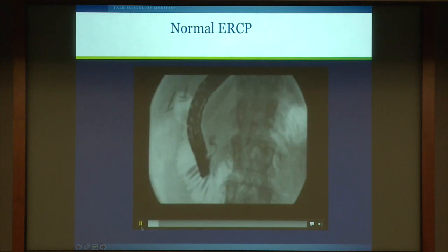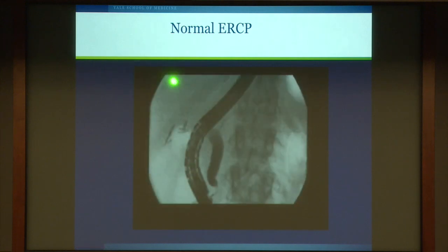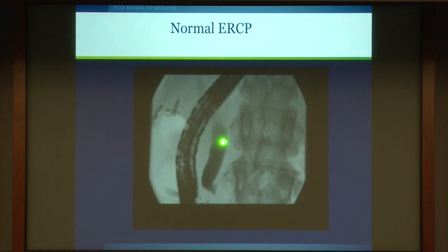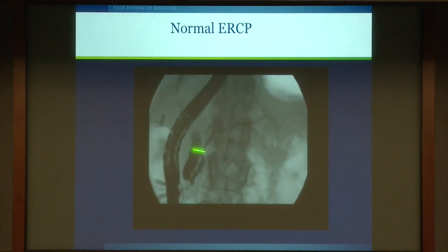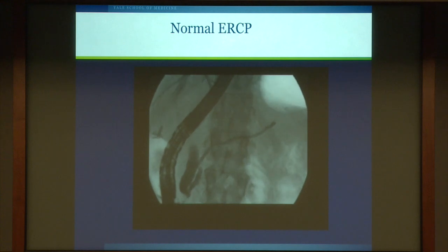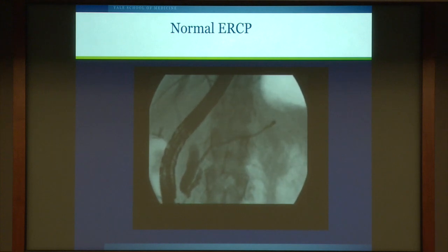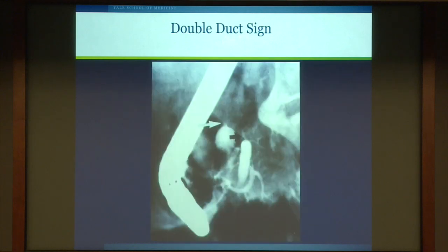Here is what an ERCP looks like — this is a side-viewing endoscope. There are some clips from a previous gallbladder surgery, and here dye is being inserted into the bile duct under radiologic control. The pancreatic duct is now being contrasted, and you can see it opacify in the head, body, and tail region. That was a normal ERCP.